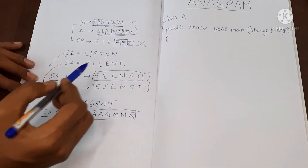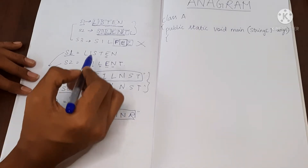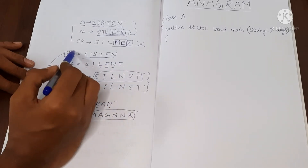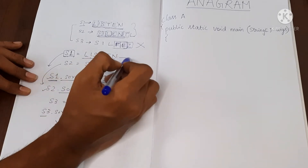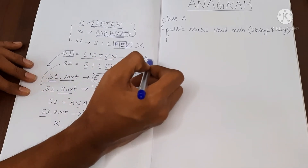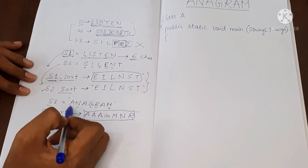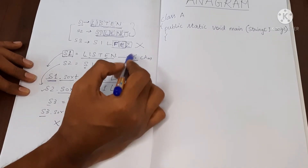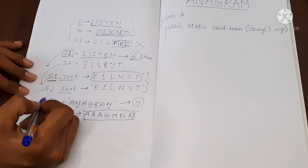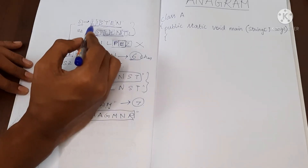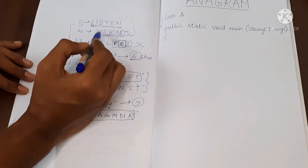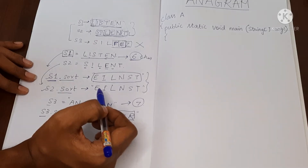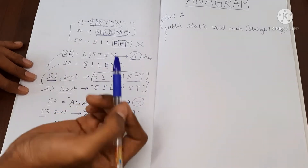Before writing the program, let me tell you one more simple optimization: compare the length of both strings first. String S1 has six characters. S3 has seven characters. If the lengths of the two strings are not the same, they cannot be anagram, because every character must appear the same number of times in both strings. So if one string has more or fewer characters than the other, they cannot be anagram.